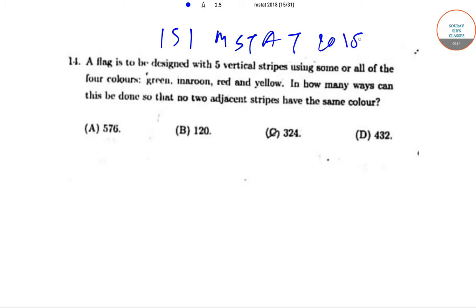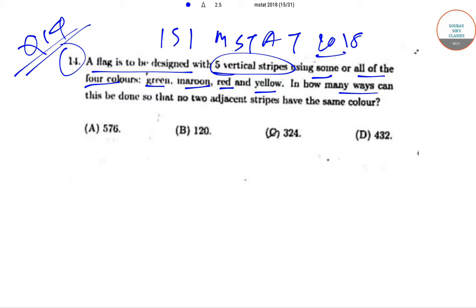Today we will be solving question number 14. In question number 14, it has been said that a flag is to be designed with five vertical stripes using some or all of the four colors green, maroon, red and yellow. In how many ways can this be done so that no two adjacent stripes have the same color? The options are 576, 120, 324 and 432.